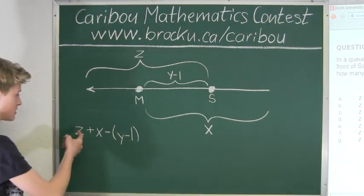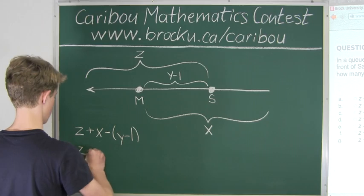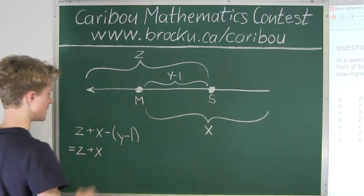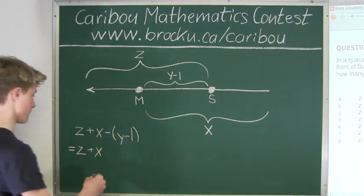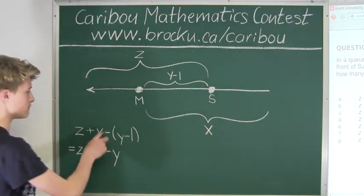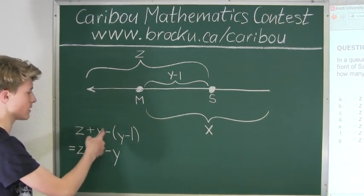So now we would still have Z plus X. And now we have minus Y. But we have minus minus 1, so the two negatives cancel out to positive. So we have plus 1.